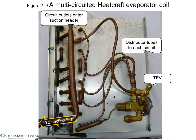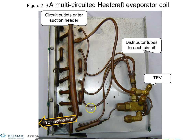The multi-circuit coil is designed to decrease pressure drop. Basically, it is one large coil with a common return, and it has different supply capillary tubes going into each circuit of the coil. So you would have one, two, three, four separate circuits on this coil with one common return.